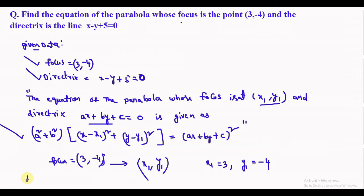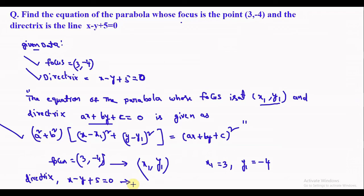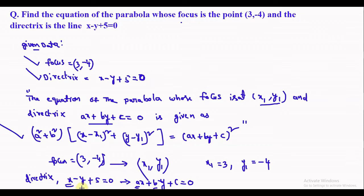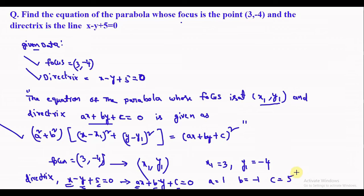Directrix: x minus y plus 5 is equal to 0. Compare to ax plus by plus c is equal to 0. Comparing, a equals 1, b equals minus 1, and c equals 5.